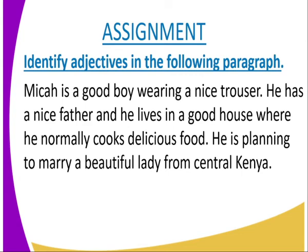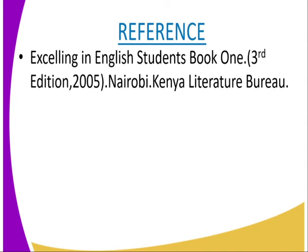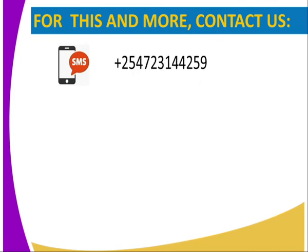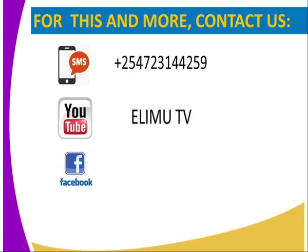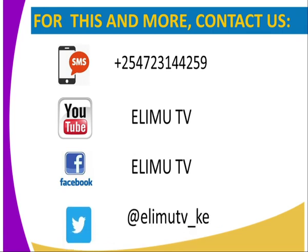We've come to the end of our lesson. Try this assignment: identify the adjectives in the following paragraph — 'Mika is a good boy wearing a nice trouser. He has a nice father and lives in a good house where he normally cooks delicious food. He is planning to marry a beautiful lady from Central Kenya.' Identify adjectives of quality, quantity, and demonstrative types. You can refer to 'Excelling in English Students Book One,' third edition, published by the Kenya Literature Bureau. Follow us on YouTube, Facebook, and Twitter at Elimu TV. Thank you.